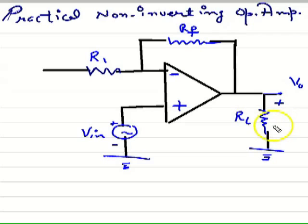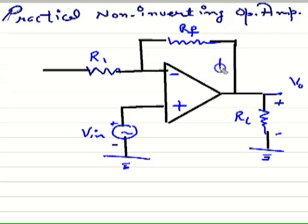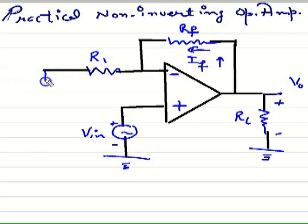This is the circuit we are making for a non-inverting amplifier. Input is applied at the plus terminal, which is the non-inverting terminal. R1 and RF are the resistors — R1 is the input resistor, RF is the feedback resistor. The current flowing through RF is IF. The left-hand side of R1 is grounded.